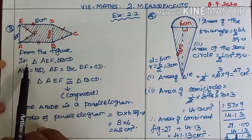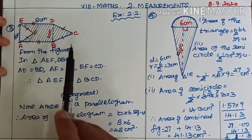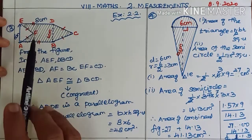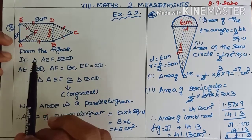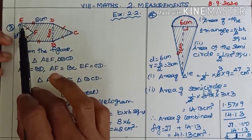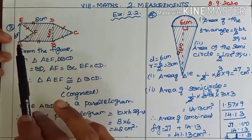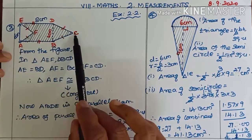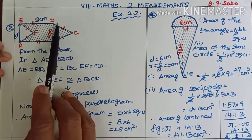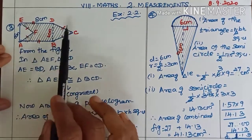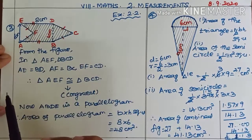From the figure, in triangle AEF and triangle BCD: AE is equal to BD, AF is equal to BD — that is the third side — and FE or EF is equal to CD. All three sides of the two triangles are equal.